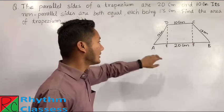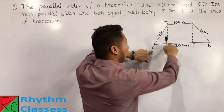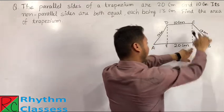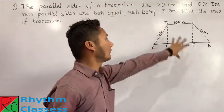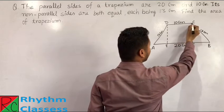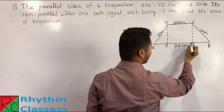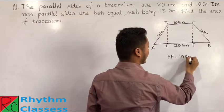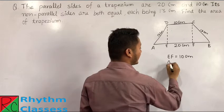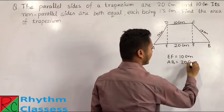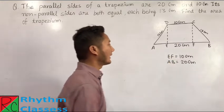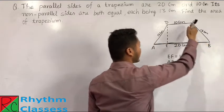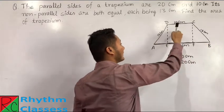Now if you look at this figure, triangle AED is a right-angled triangle, and triangle FBC is also a right-angled triangle. Since DC is 10 cm, the distance EF is equal to 10 cm, and the distance AB is equal to 20 cm.